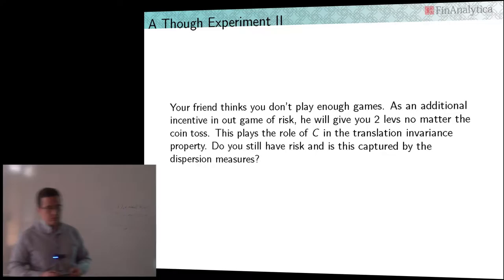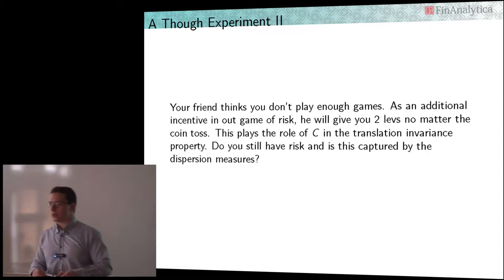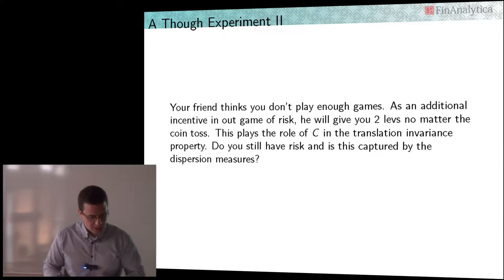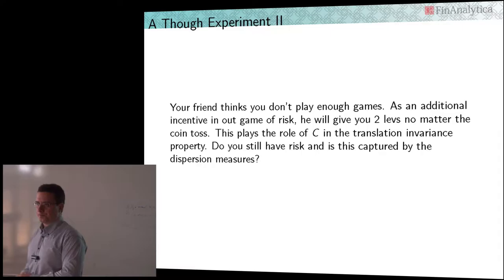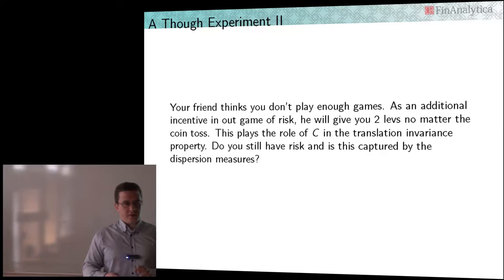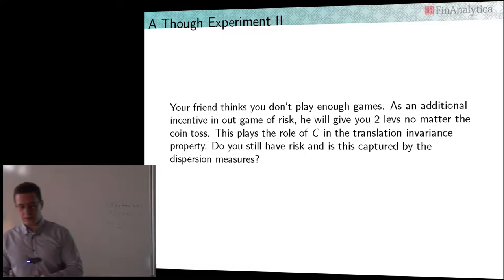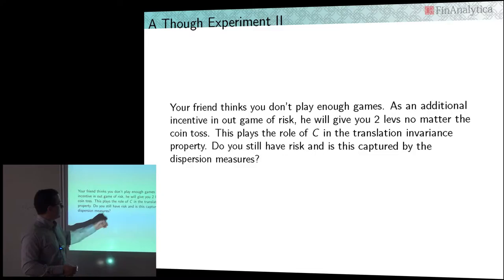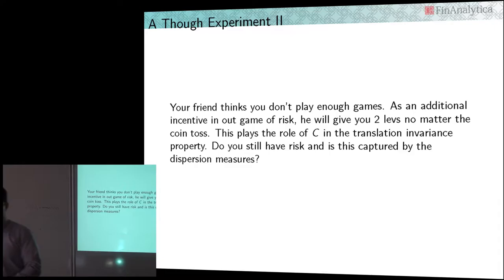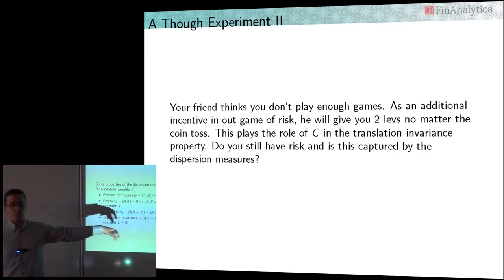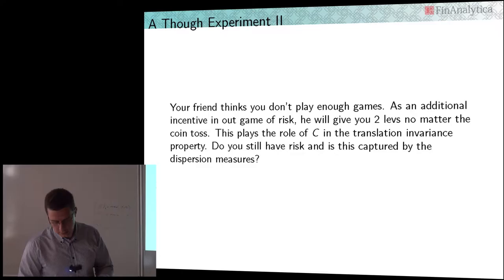Extending the thought experiment: a friend wants you to gamble and will give you 2 regardless of the outcome. This is the same as having cash in your portfolio. Even if you lose the coin flip and lose 1, he gives you 2 and you are 1 ahead — so there is no risk. This payoff, external to the game, mitigates the risk. The translation invariance property for dispersion measures breaks this — we're not seeing this effect and not lowering the risk measure with the constant.